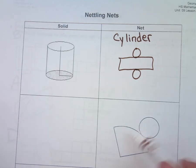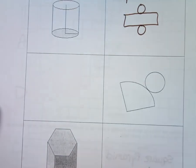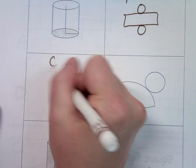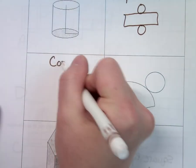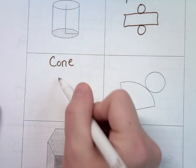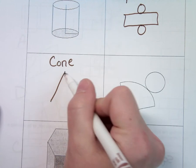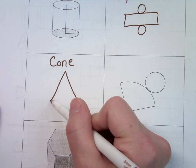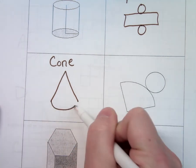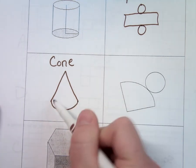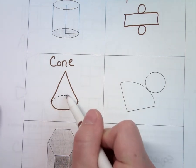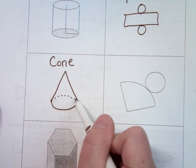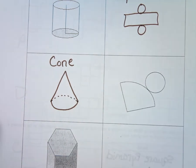In the next one they gave us the net — it's a cone. So this time we want to draw a cone. I draw an upside-down V, then make a little curve with it, and then a little curved dash so it looks 3D.